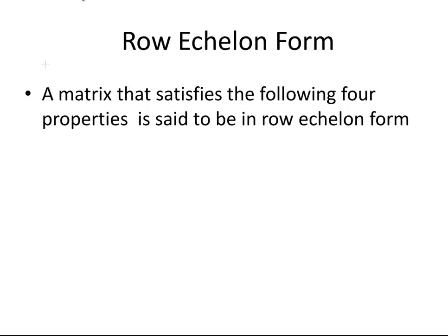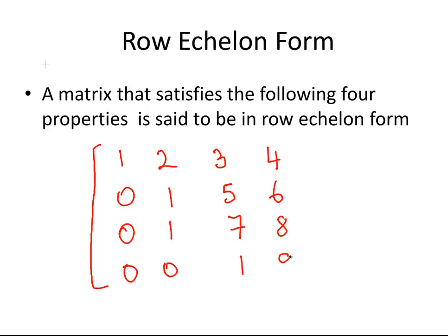I'm just going to start by drawing out a matrix here. We have 1, 2, 3, 4 in the first row, 0, 1, 5, 6 in the second row, 0, 1, 7, 8 in the third row, and 0, 0, 1, 9 in the fourth row. We'll use a matrix like that.